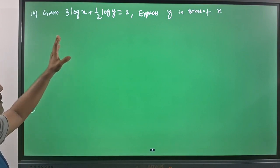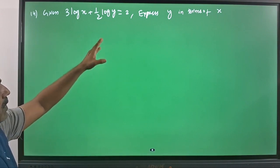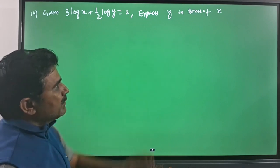Our next question is: given 3 log x plus half log y equals 2, express y in terms of x.